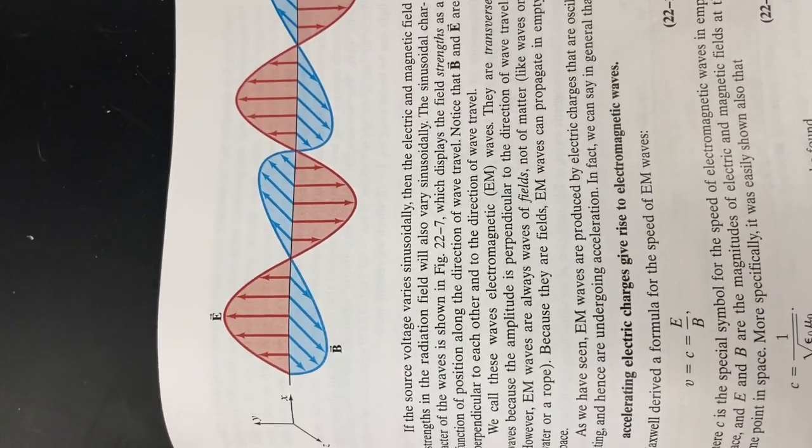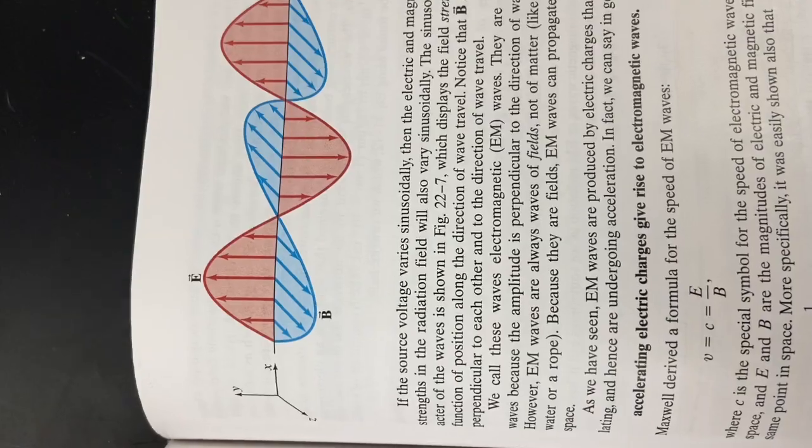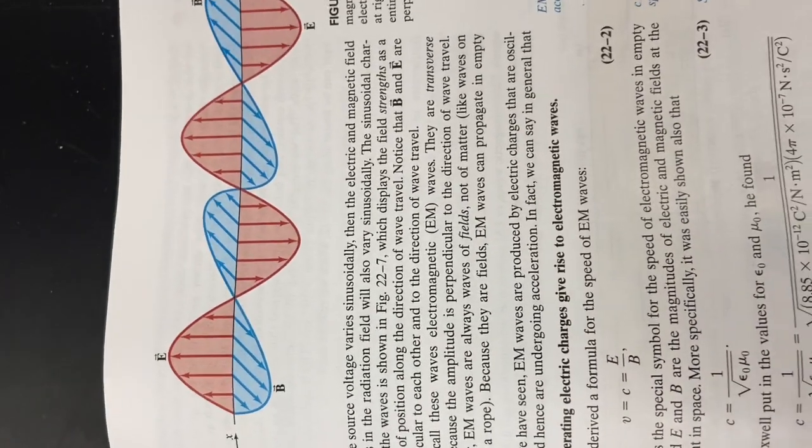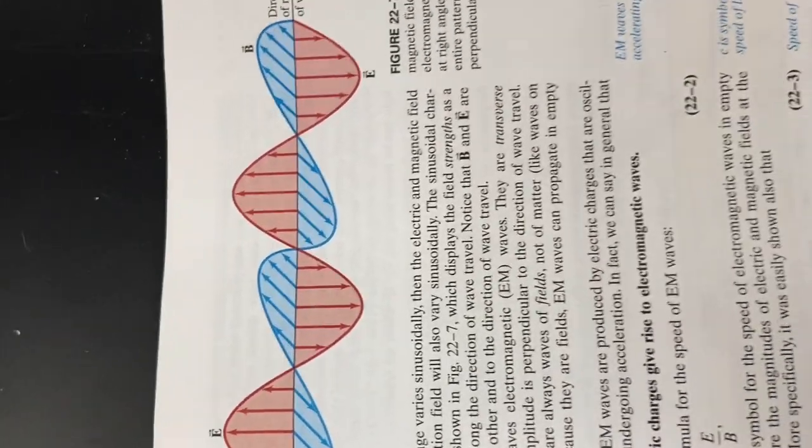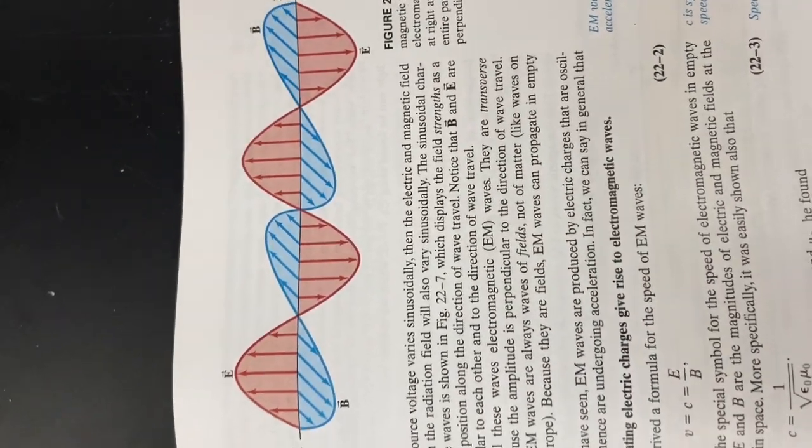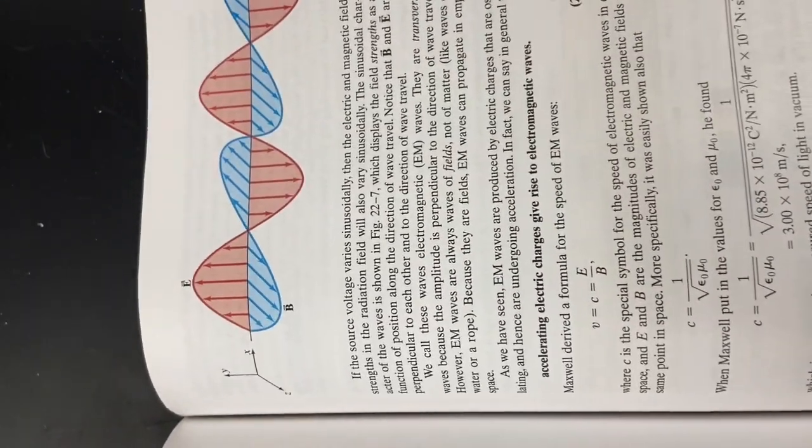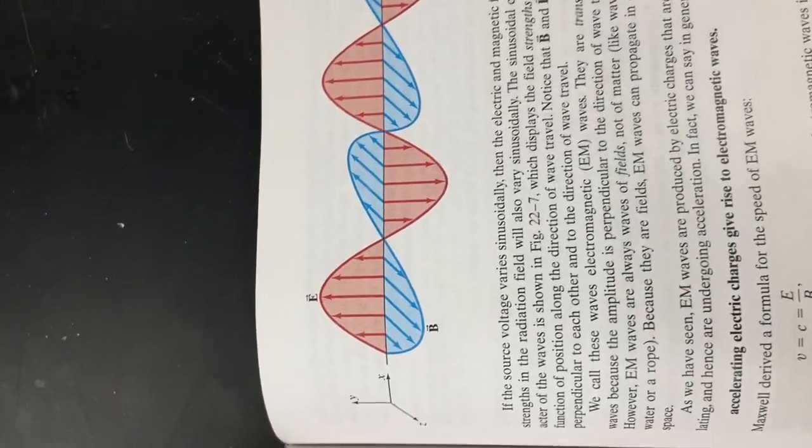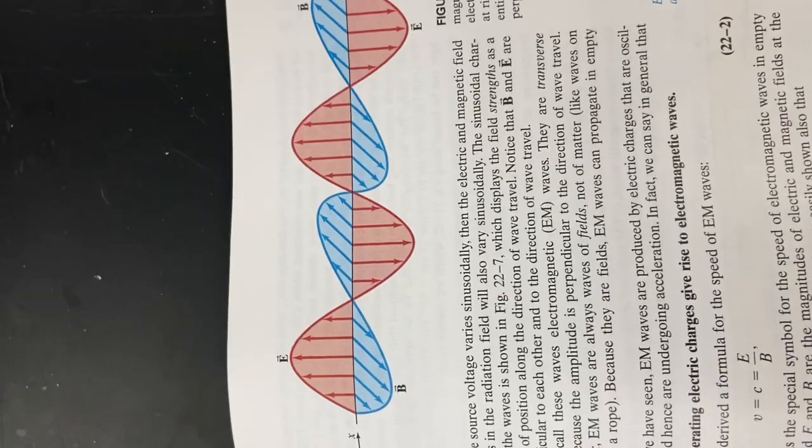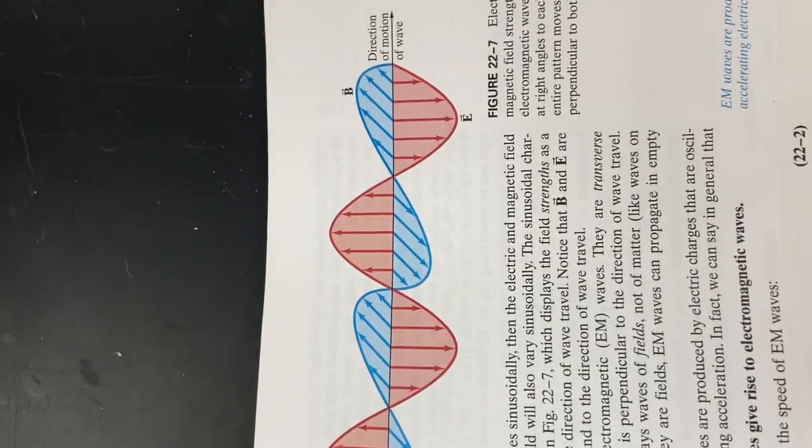So the electric field is strongest, as you would think, when the magnetic field is strongest. And that is a self-propelled transverse wave called the electromagnetic wave, which is what light is, that pushes itself through space at 300 million meters per second, or 186,000 miles per second, or seven times around the earth in one second.